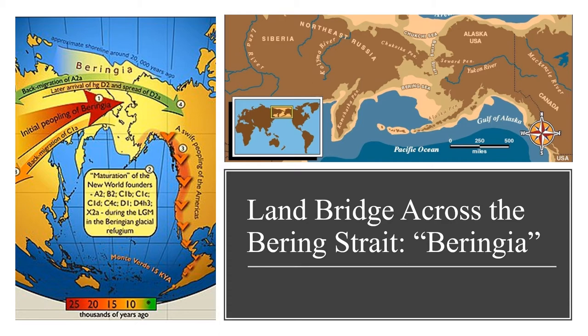These Paleo-Indians probably walked across Beringia, but some scholars think that they may have used canoes or other primitive boats as well, allowing them to travel more quickly and easily. The relative ease at which humans could travel over water before the development of steam power and internal combustion engines will be a major theme in this course, so keep this point in mind as we go forward.